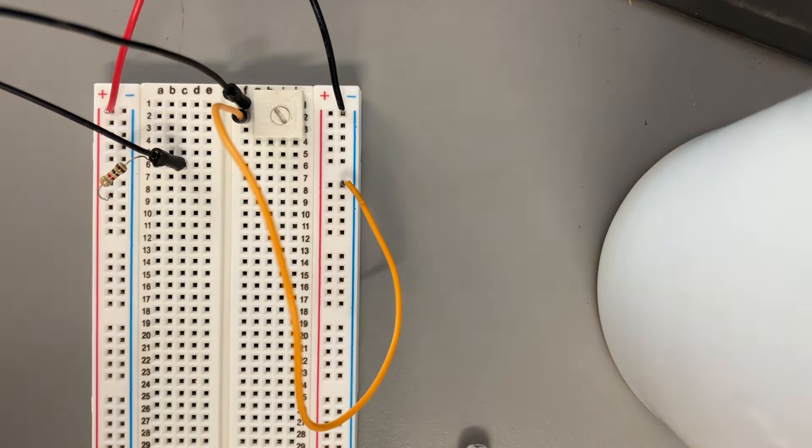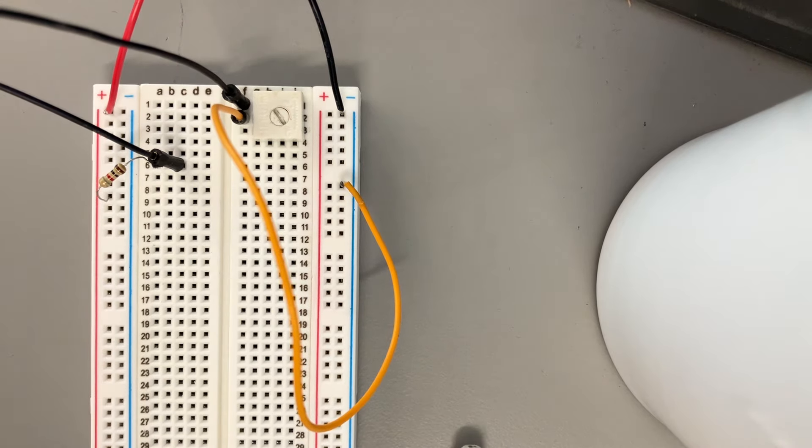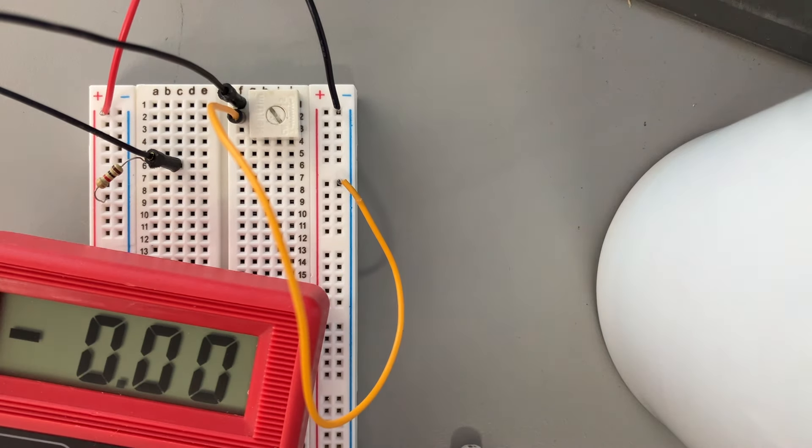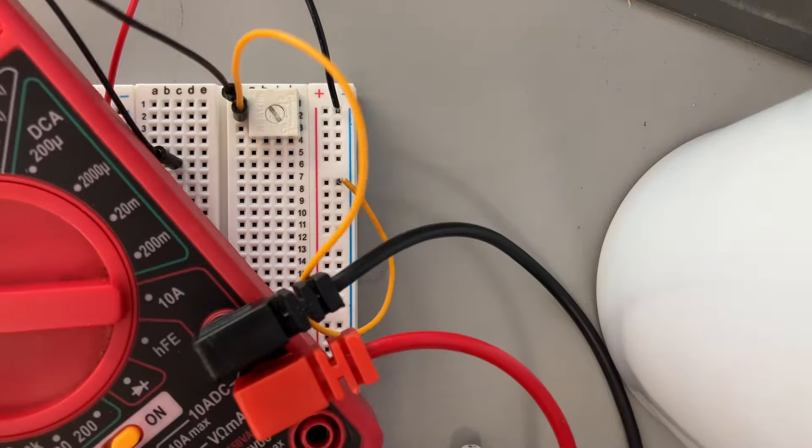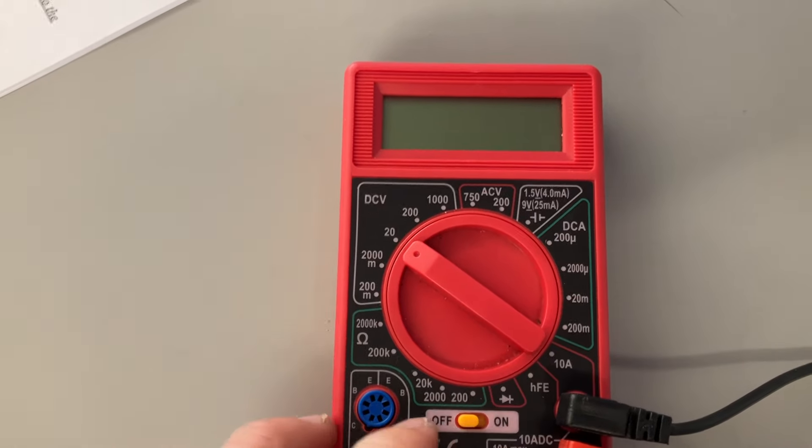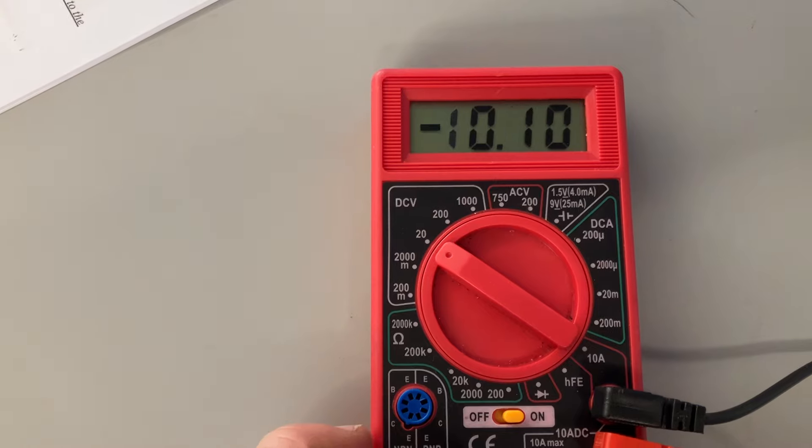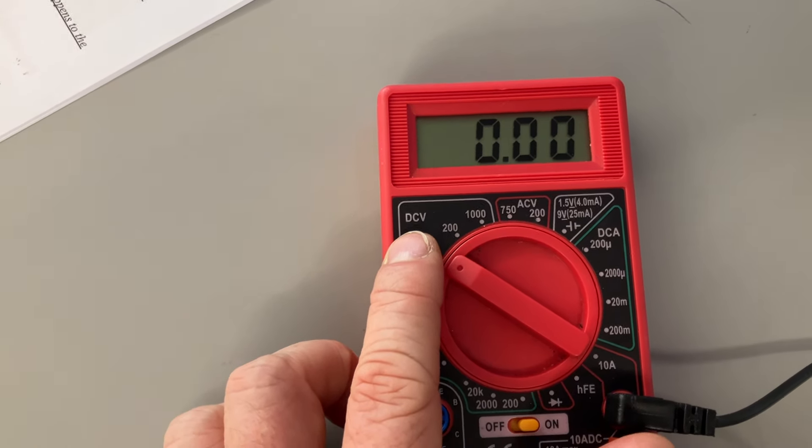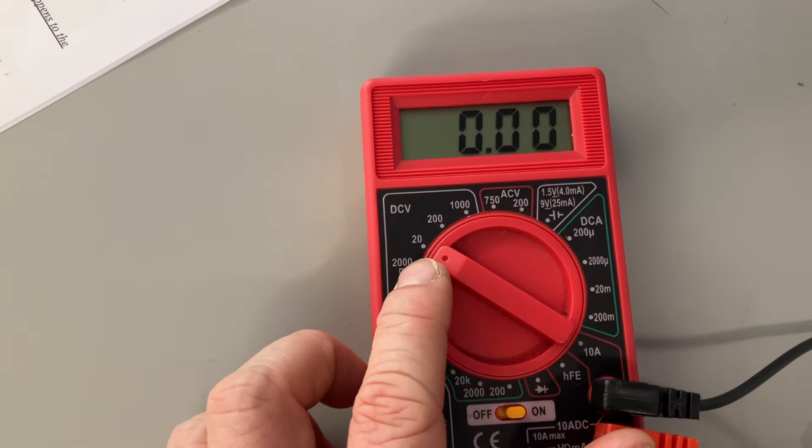Now I can double-check and see how this is working. I have my multimeter here, and my multimeter is turned on. In order to turn it on, I have flipped the switch from off to on, and I have it set to 20 DC volts, so it will measure up to 20 volts.